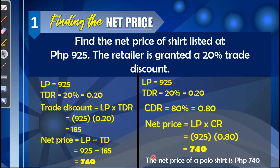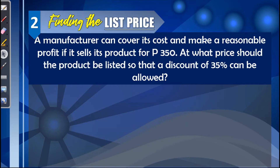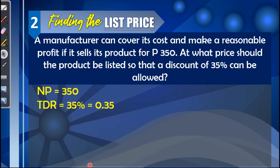Second example — finding the list price. A manufacturer can cover its cost and make a reasonable profit if it sells its product for 350 pesos. At what price should the product be listed so that a discount of 35% can be allowed? According to the problem, we are looking for the list price. Identify the given values: the net price is 350 pesos and the trade discount rate is 35%. For this problem, only the second method — the complement method — can be used to find the list price.